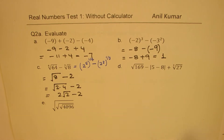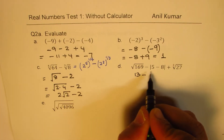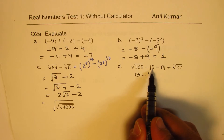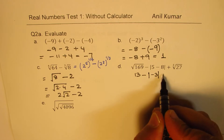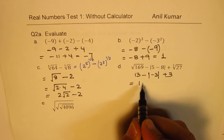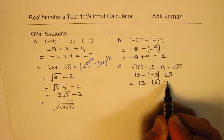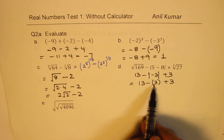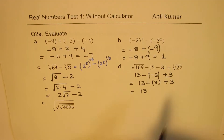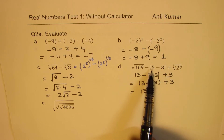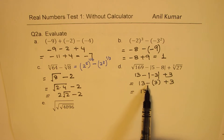Next, evaluate square root of 169 minus absolute value of (5 minus 8) plus cube root of 27. Square root of 169 is 13. The absolute value of (5 minus 8) is the absolute value of negative 3, which is positive 3. Cube root of 27 is 3. So we get 13 minus 3 plus 3, and the answer is 13. Be careful not to skip steps — the absolute value makes the quantity positive 3, so the negative sign outside remains and then cancels with the cube root.